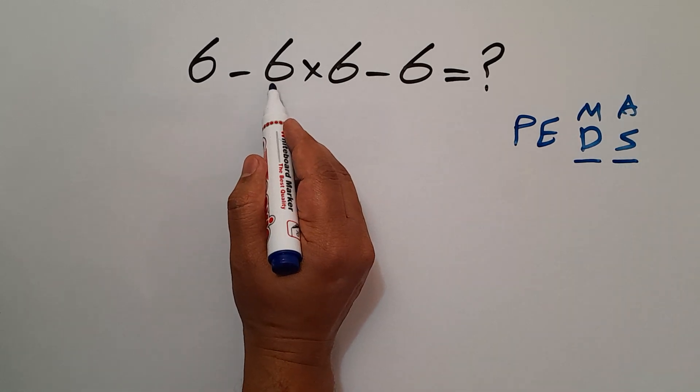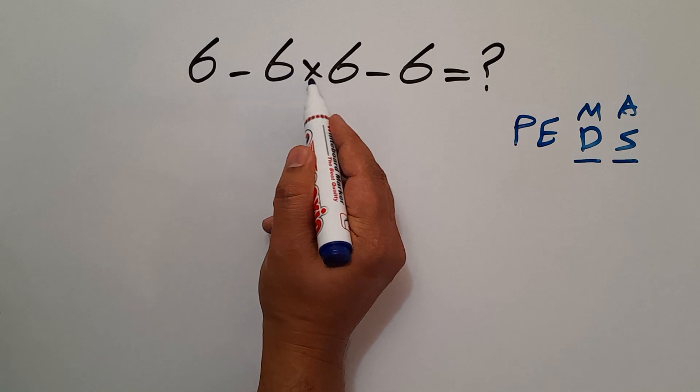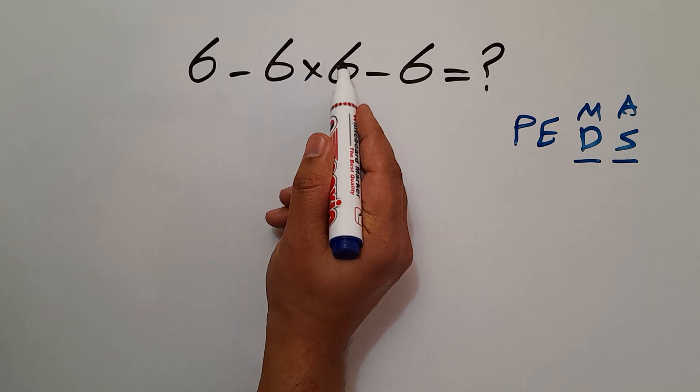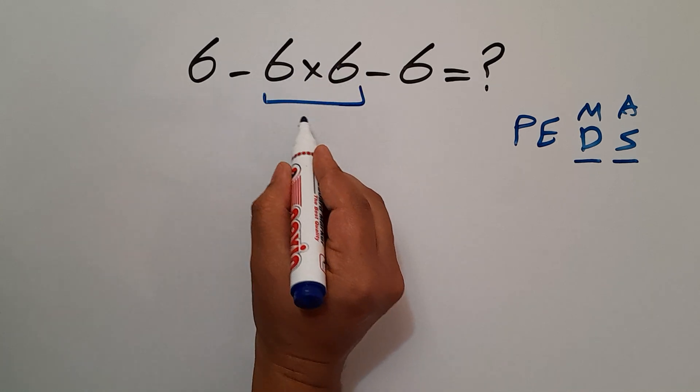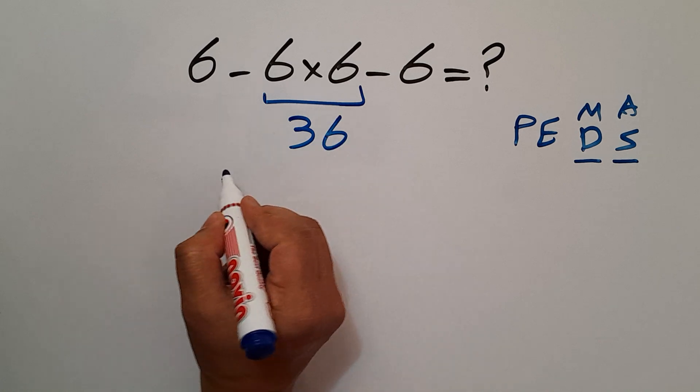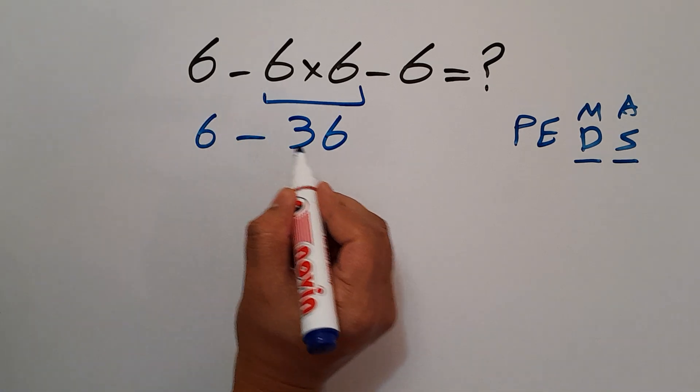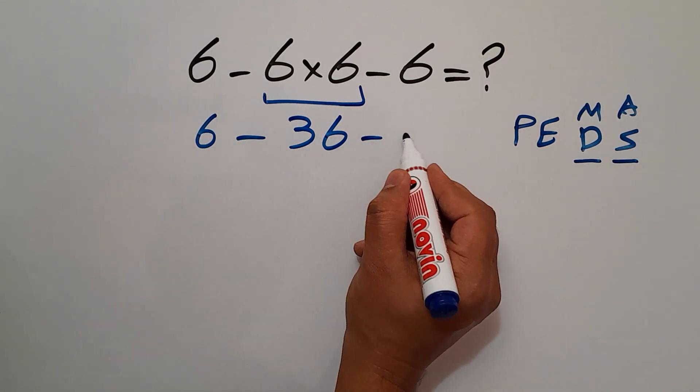So here, first we have to do this multiplication. 6 times 6 gives us 36. So we have 6 minus 36 minus 6.